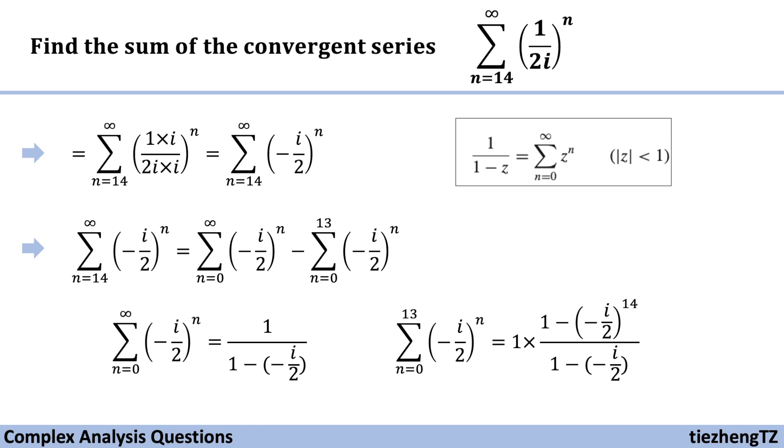Next we just need to use the first equation minus the second equation to get the sum of the given convergent series n starts from 14 to infinite, 1 over 2i to the power of n.